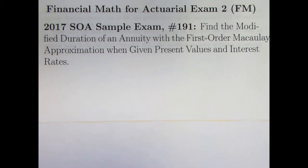We'll be finding the modified duration of an annuity with the first-order Macaulay approximation when we're given present values and interest rates. This is going to allow us to practice also using logarithms, because the unknown is going to be in an exponent, and it's also going to illustrate something important.